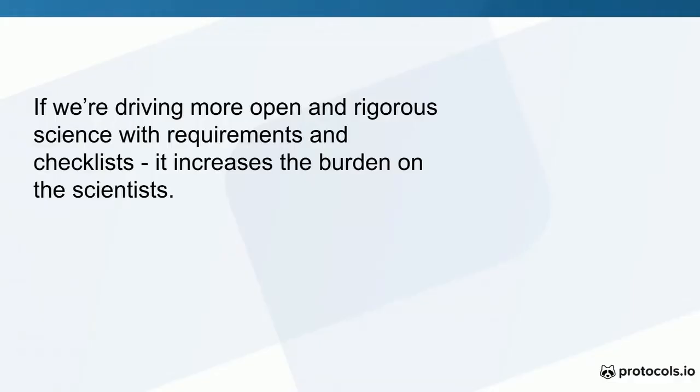If we think back to the PNAS paper — the increasing time to publish, the increasing number of things we're asking trainees to do — we have to be really mindful as we ask them to not only publish with more things, but also do a better job of sharing when they publish. If we only lean on requirements, compliance checklists, publication mandates, or funder mandates, then we risk asking those students and postdocs to do even more. I think journals should be requiring data — I'm not arguing for lower quality control — but we also need to think how do we help the scientists and trainees, and not just keep piling more and more burden on them.